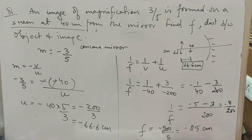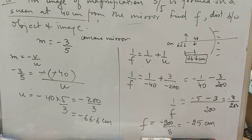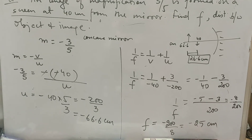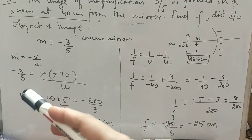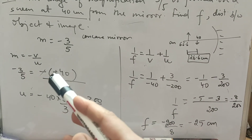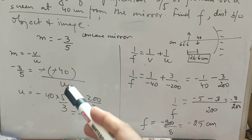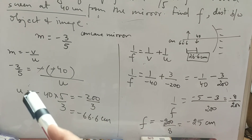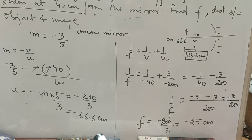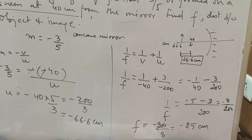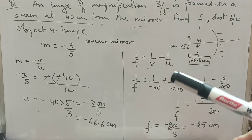Using the magnification formula m = minus v/u: putting m = minus 3/5 and v = minus 40 (screen position), cross-multiplying gives u = minus 200/3, which is approximately minus 66.6 centimeters. We then put this value into the mirror formula.